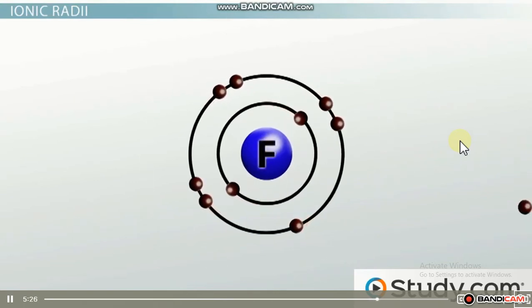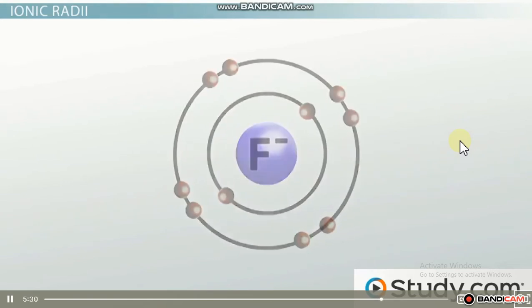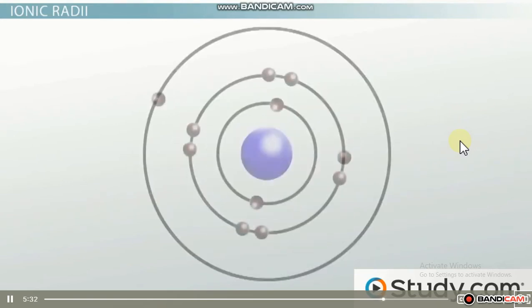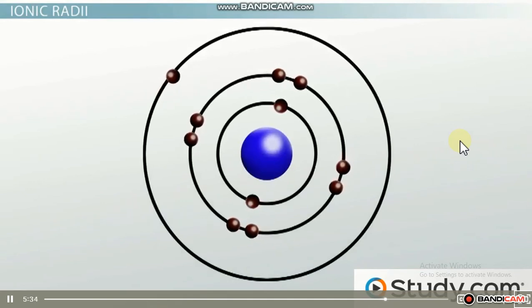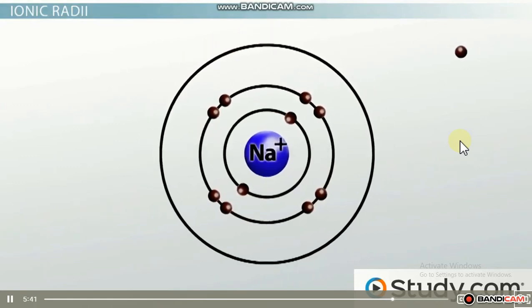For example, fluorine is going to be smaller than fluoride. On the other hand, for atoms that lose electrons to form a positive ion, that ion will be smaller than its atomic counterpart because it's lost something. So sodium is going to be larger than sodium ion.